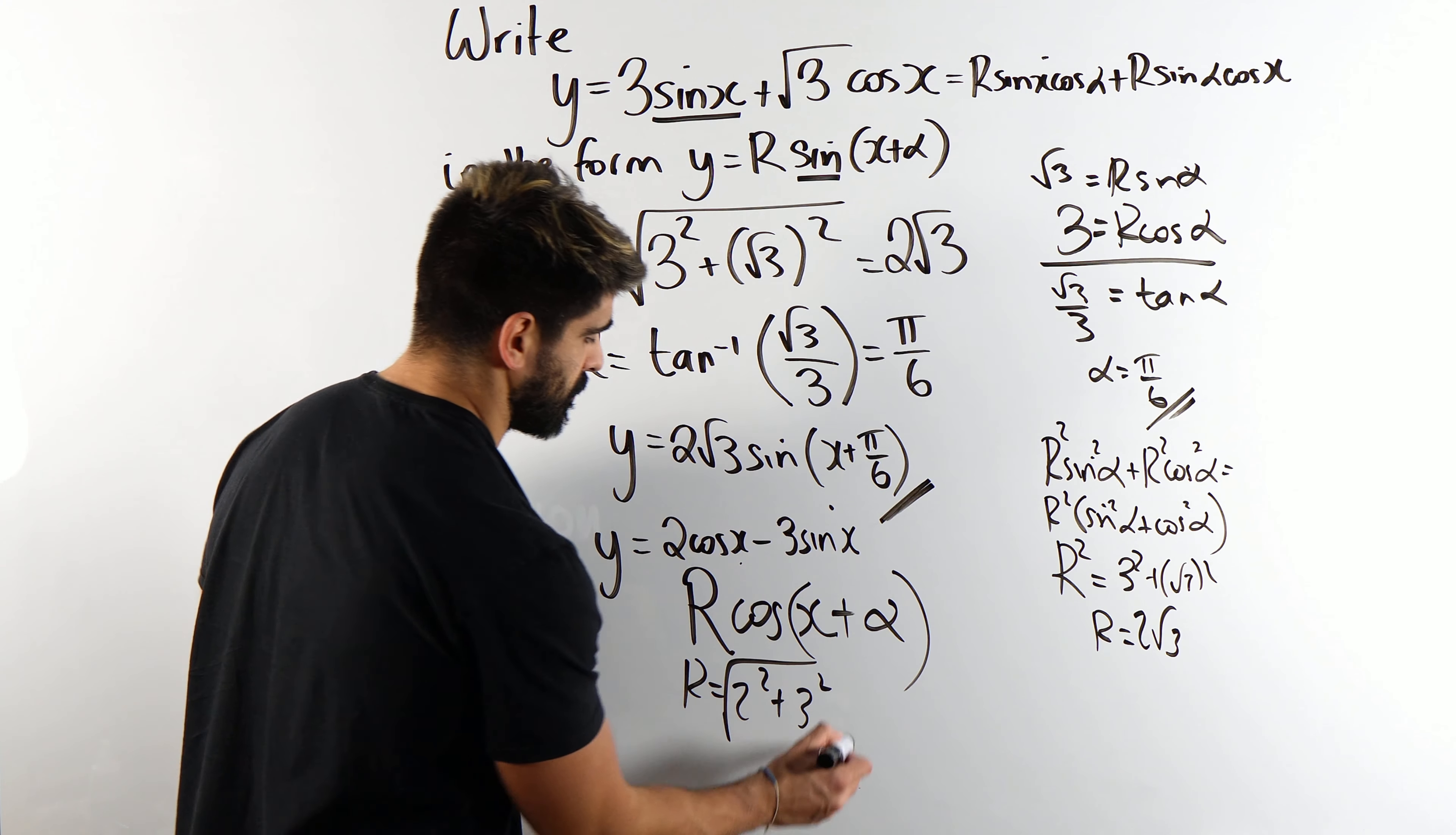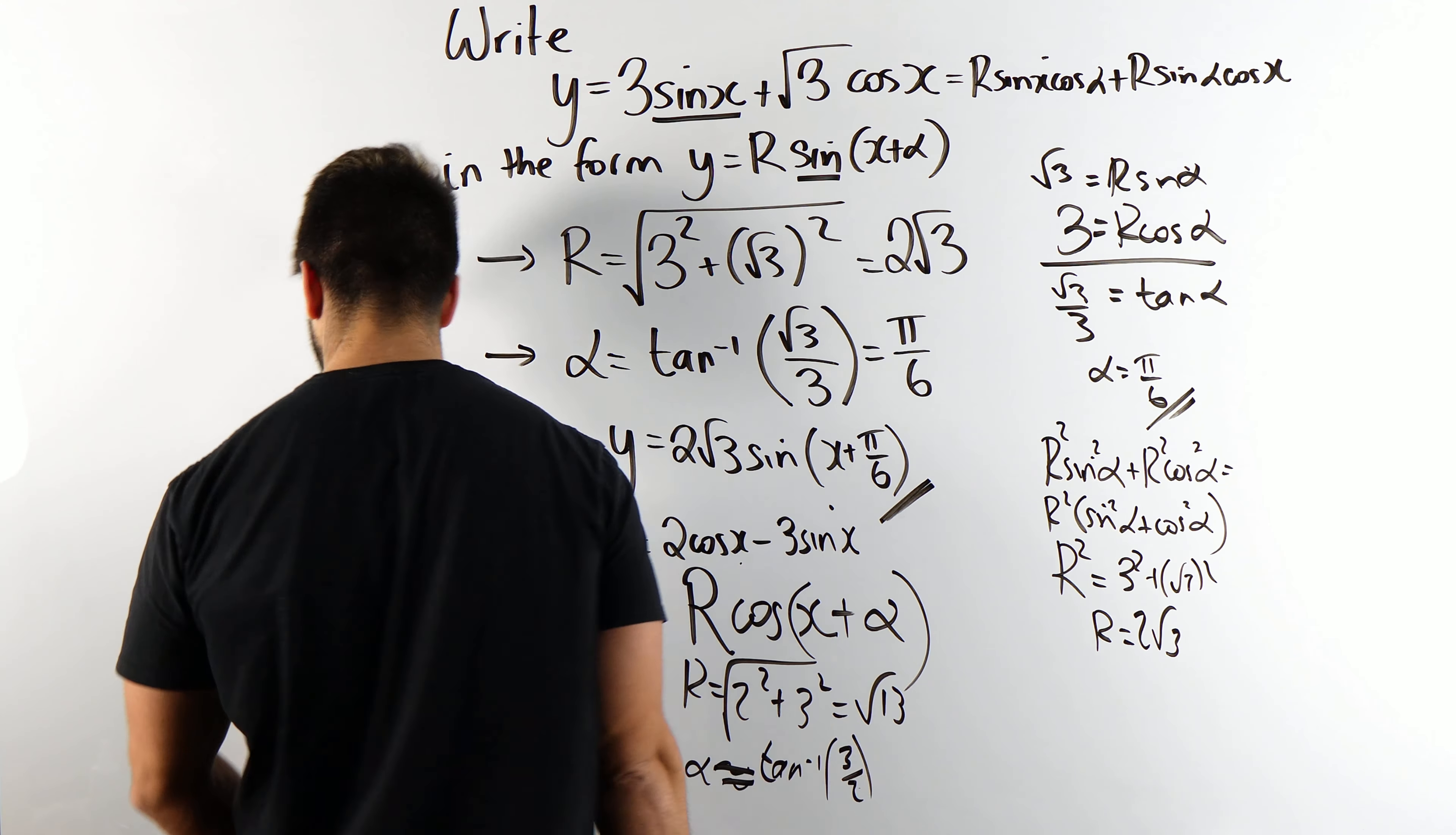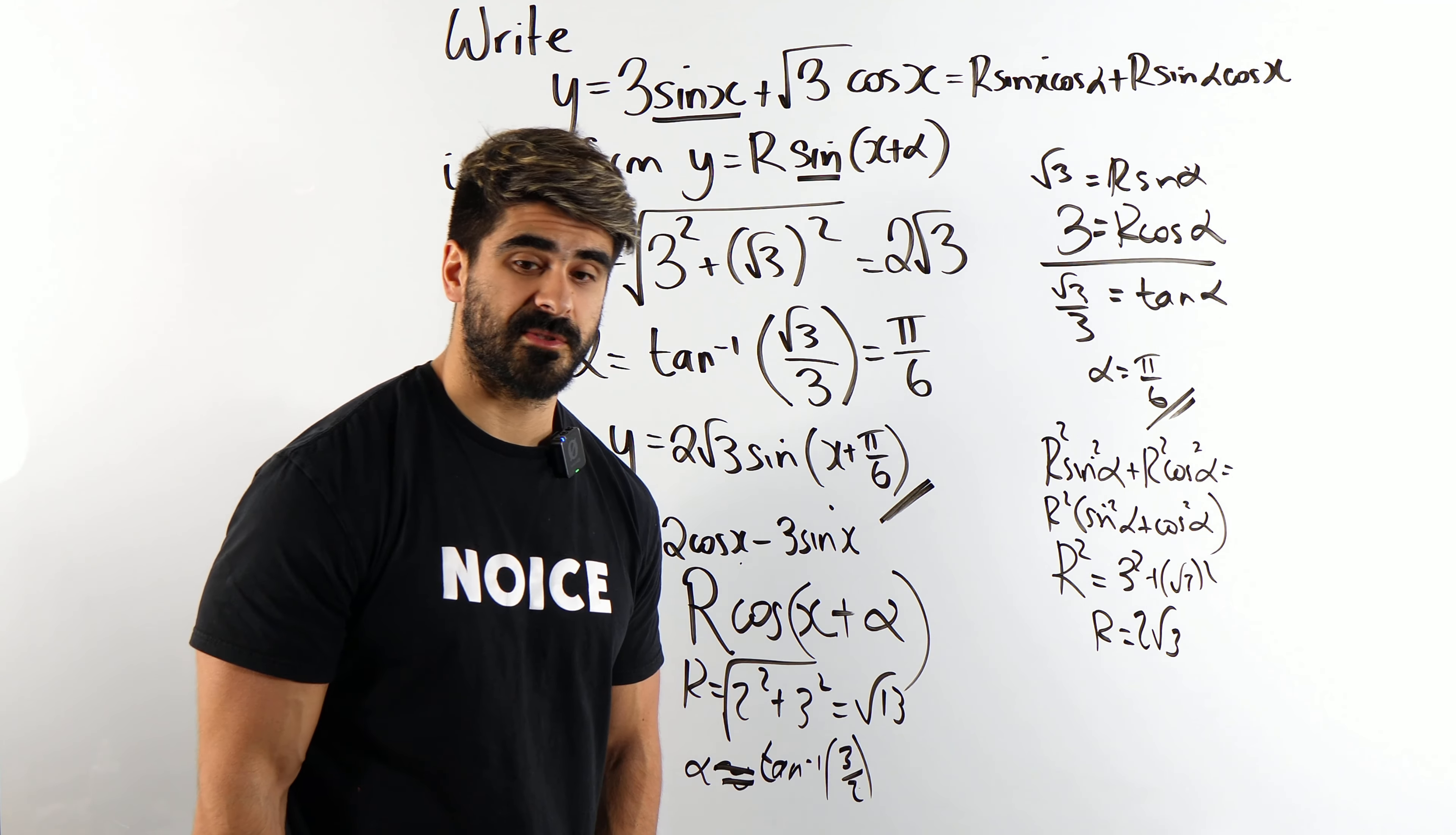Which is 9 plus 4, so root 13. And then alpha, this would give you some decimal. Actually I can say equals for now, is inverse tan of the second number 3 over 2, which I don't even have my calculator. Anyway, it doesn't really matter. So you just type that in, wherever that is to 3SF you can type that in.